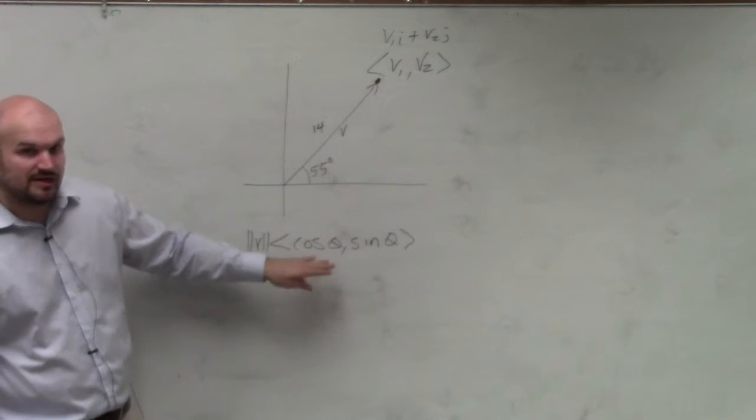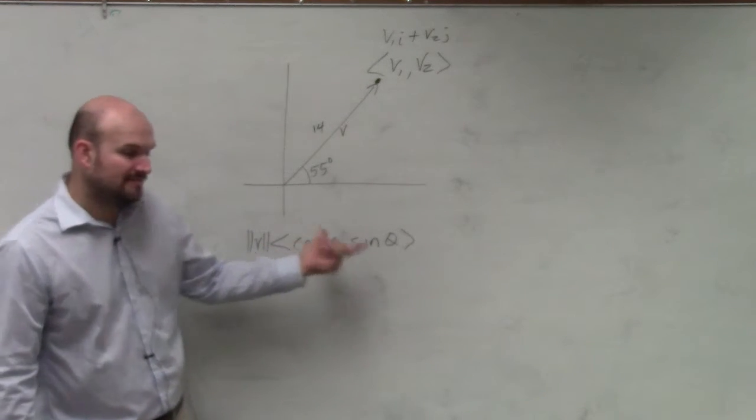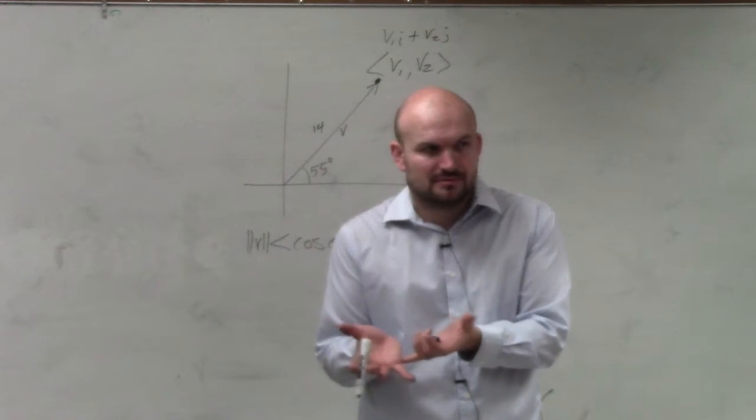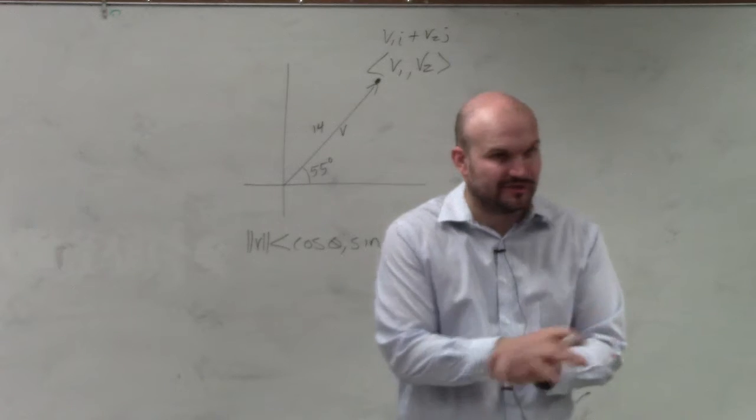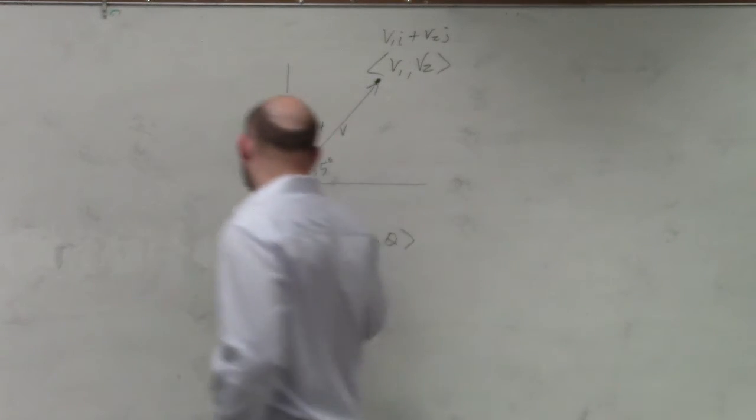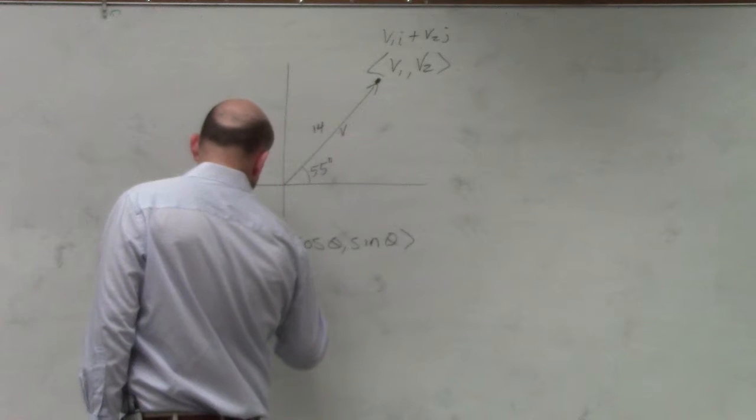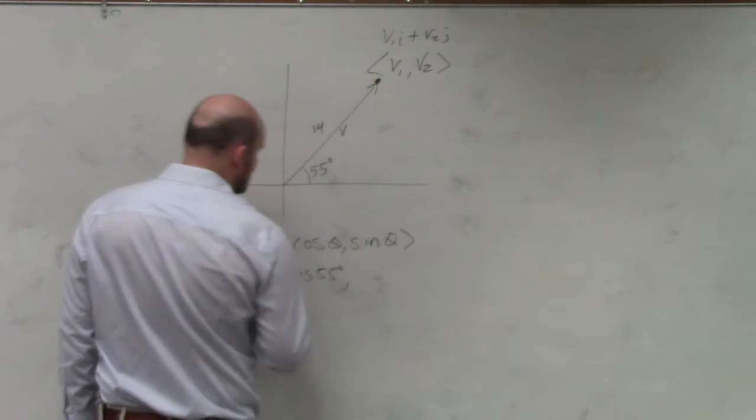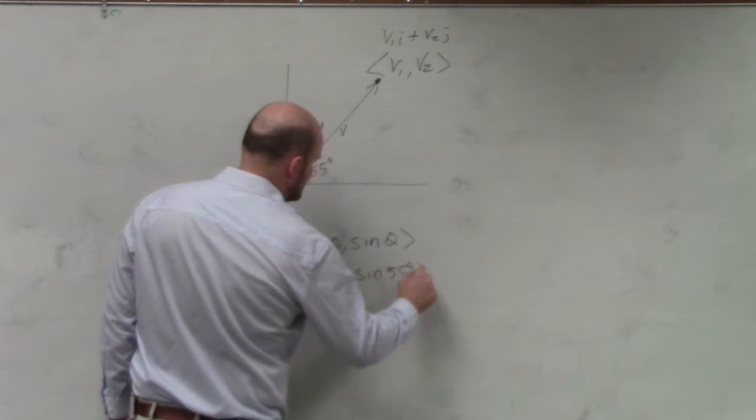So here's another way to write your vector, basically just the shorthand. If you're given the angle and you're given the magnitude, you can write the vector just like this. So therefore, we have 14 times cosine of 55 degrees, comma sine of 55 degrees.